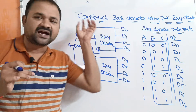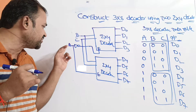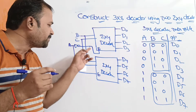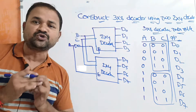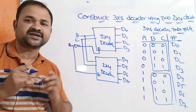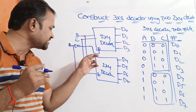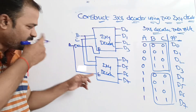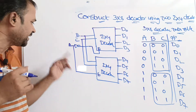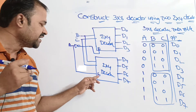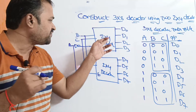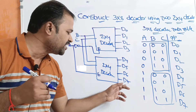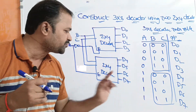We know that we require an enable input. For the enable input we are using A. The complement of A is passed as enable input to the first 2x4 decoder, where E stands for enable input. The value of A is passed as enable input to the second 2x4 decoder. The first 2x4 decoder produces four outputs from D0 to D3, and the second 2x4 decoder produces four outputs from D4 to D7.